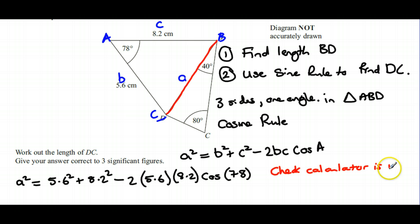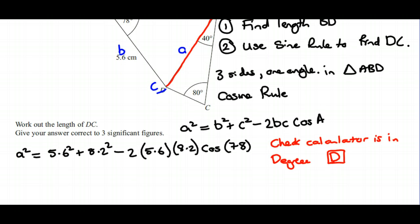That means there should be a little D at the top of the screen, meaning it's in degrees. If it says R or G, then you need to change it because it will mean this bit won't calculate cos of 78 degrees correctly in order for the question to work.